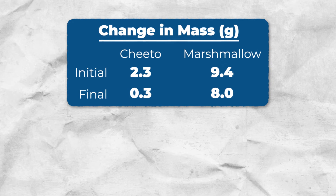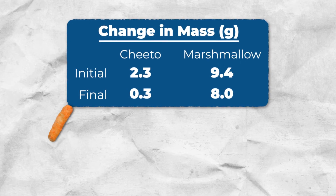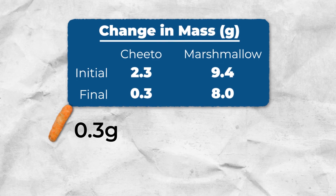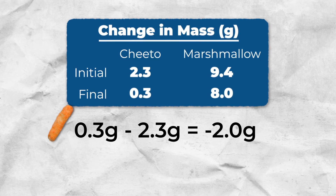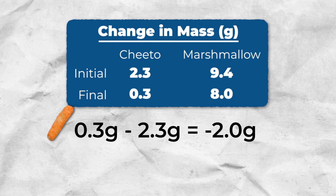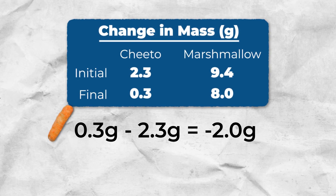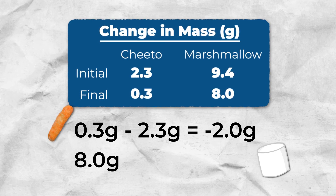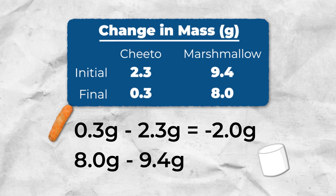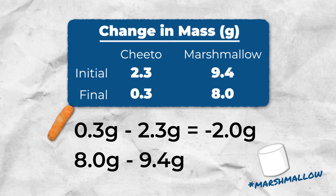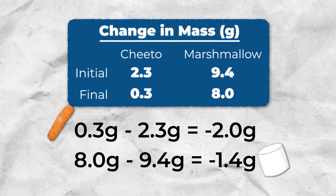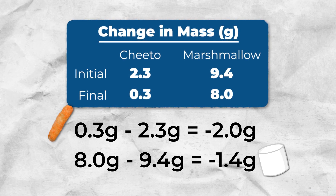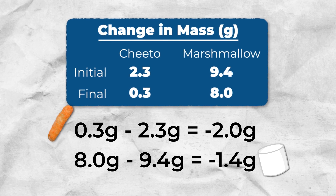We then looked at mass to confirm our findings. The Cheeto's final mass was 0.3 grams; subtracting the initial mass gives a change of negative 2.0 grams — it shrunk by 2.0 grams. For the marshmallow, the final mass was 8.0 grams and the initial was 9.4 grams, giving a change of negative 1.4 grams. The Cheeto changed more in mass, which solidifies that it has more calories than the marshmallow.